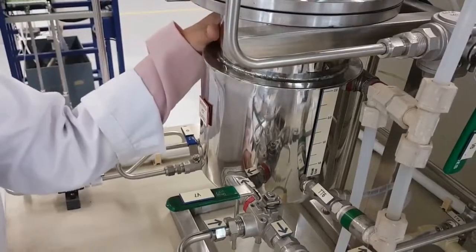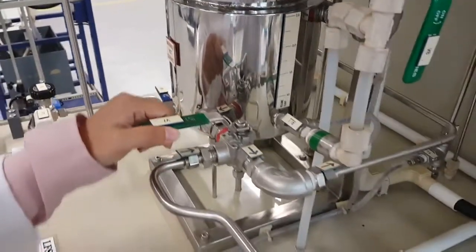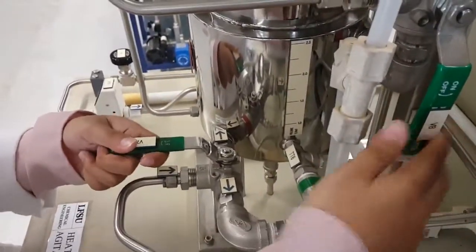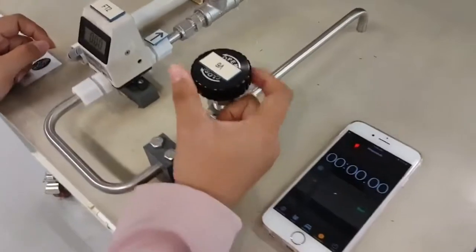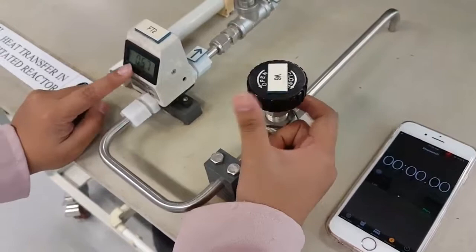To heat up the cold water by filling up the jacket using hot water, make sure that all the valves are in proper position. And then, switch on the pump. And now, we slowly open and adjust the flow rate until our desired flow rate which is 1.5.